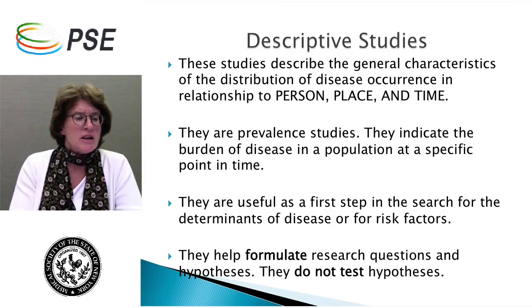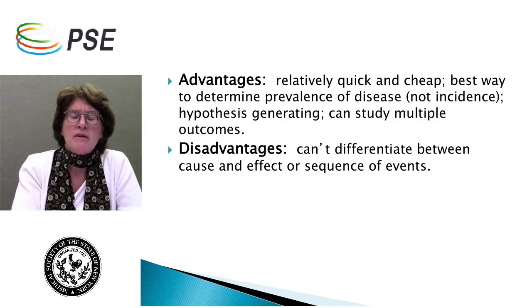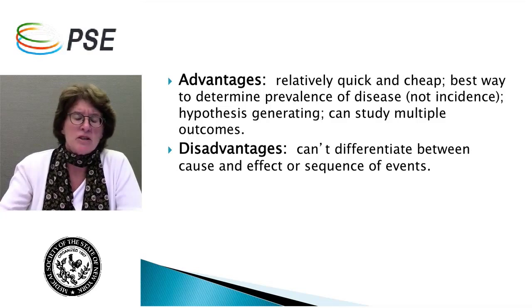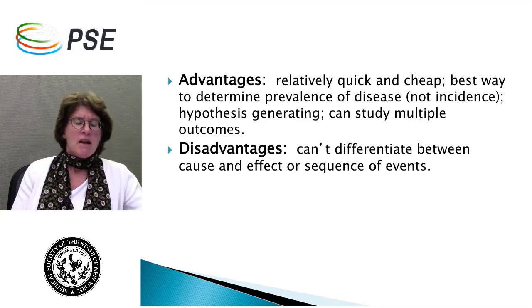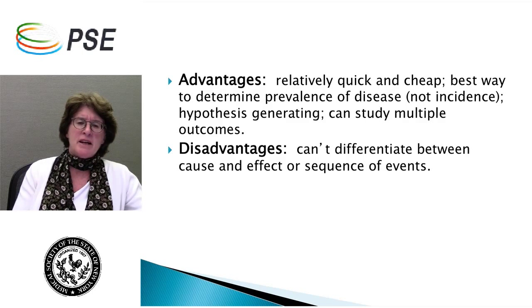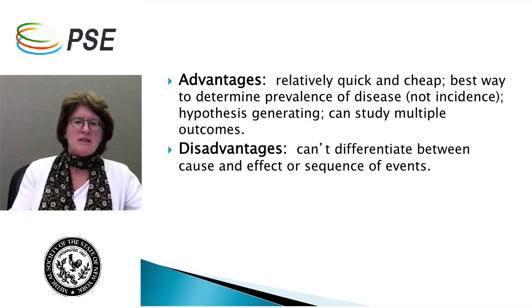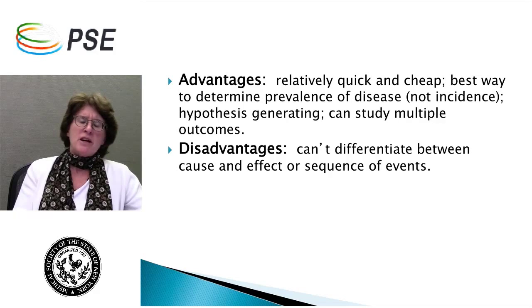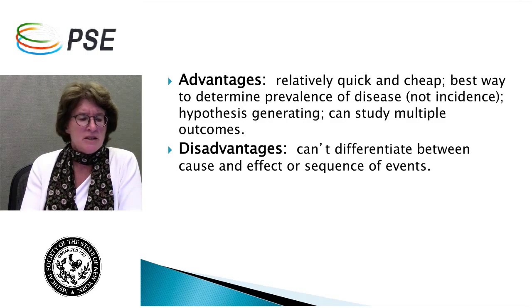Descriptive studies are quick and cheap comparatively. They're very good for looking at prevalence and can generate hypotheses for further analytic testing. You can also look at multiple outcomes. But they rely on data collected usually by governments at the state, federal, or city level, and are good as background information. However, you cannot look at cause and effect or a sequence of events — you have no idea when the person got sick, whether it was in January or July or November. You just know that in one year, X number of people had the disease. You can't differentiate between cause and effect or sequence of events.